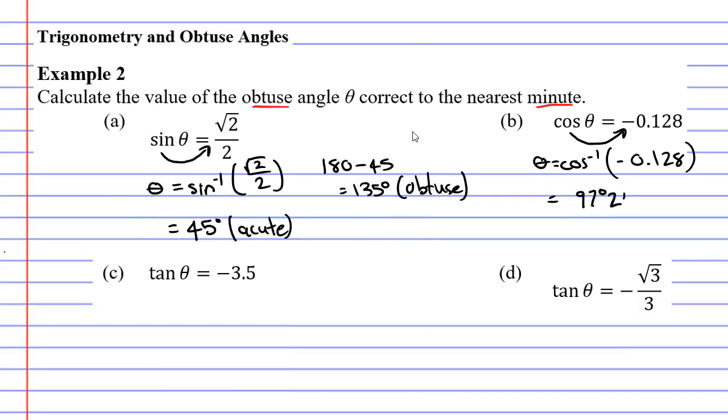97 degrees, 21 minutes. And this angle is obtuse because it is between 90 degrees and 180 degrees. So we can just end that one there. Let's now move on to question C.